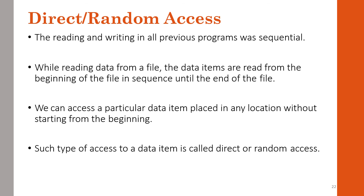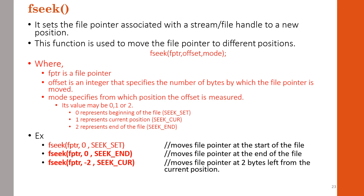Next is direct or random access. The previous methods used sequential access — reading the first character, then second, then third in sequential order. With random or direct access, you can read a data item at any particular location directly. The fseek function helps set the file pointer associated with a stream to a new position.